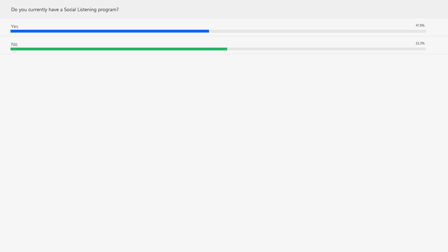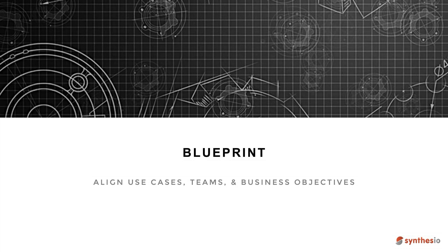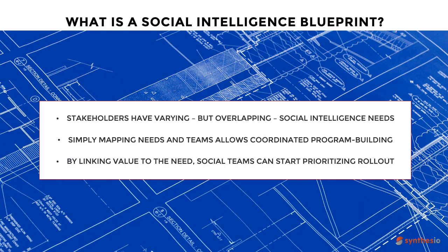We'll jump into blueprinting — setting a map or framework for exactly how your social intelligence will be distributed across your organization. Stakeholders in any organization have varying but overlapping social intelligence needs: CMO, CPO, COO, CRO — all can use data, though it often overlaps across teams. By blueprinting common use cases and business problems to social intelligence KPIs and teams, we can map needs and coordinate a program that links value to need.